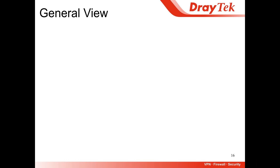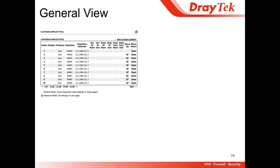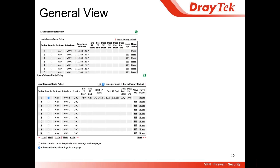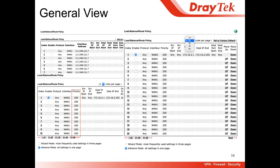In the previous version, you don't see the priority in the general view. In the new version, we put in priority. We also give you a drop-down menu to show more policies — you can choose how many rules you want to show per page, so you can compare different policies.